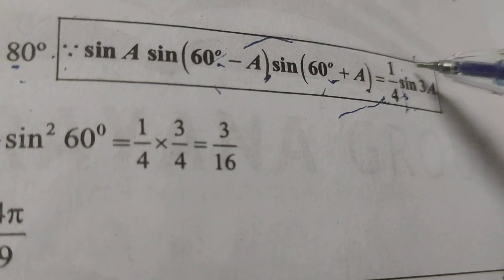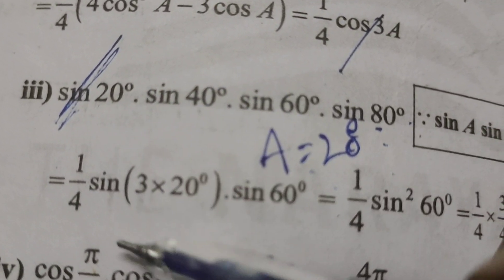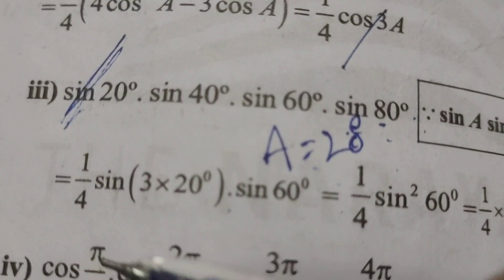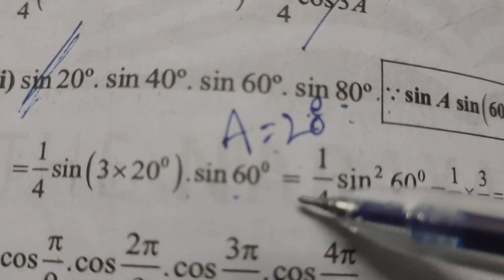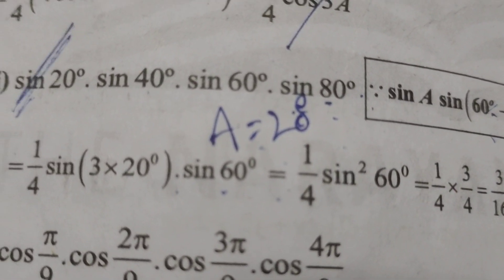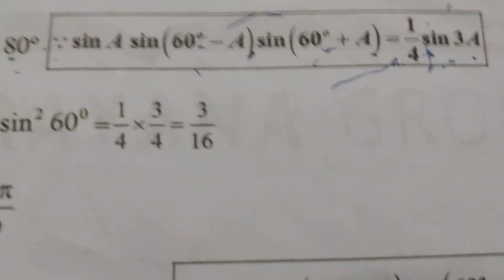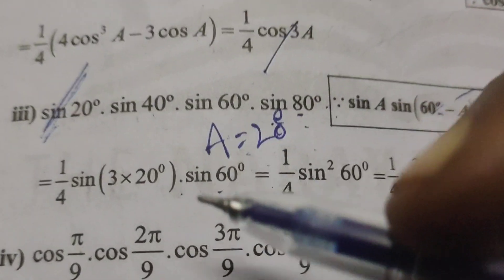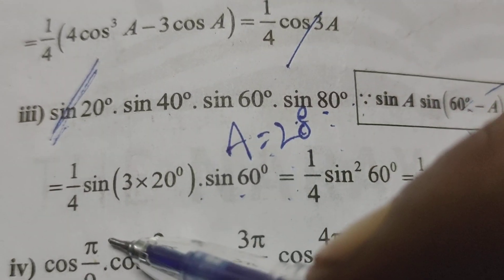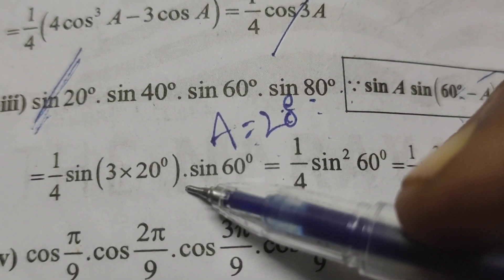Then we write this formula as 1/4 sin 3A. Therefore, 1/4 sin(3 × 20°) · sin 60° equals 1/4 sin 60° · sin 60 degrees.